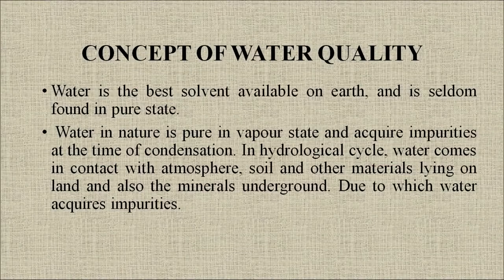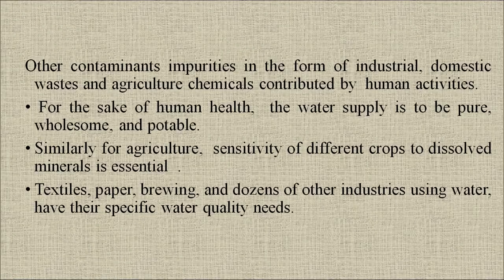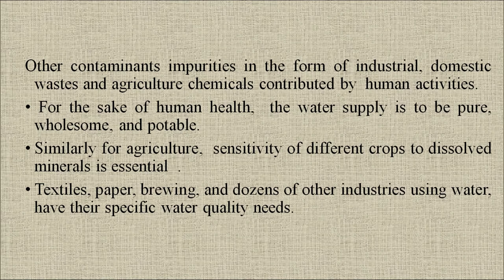Regarding the concept of water quality: water is the best solvent available on earth and is seldom found in pure state. Water in nature is pure only in vapor state and acquires impurities at the time of condensation. In the hydrological cycle, water comes in contact with the atmosphere, soil and other materials on land, and also minerals underground, due to which water acquires impurities. Other contaminants in the form of industrial, domestic waste and agricultural chemicals are contributed by human activity. For agriculture, sensitivity of different crops to dissolved minerals is essential to consider.